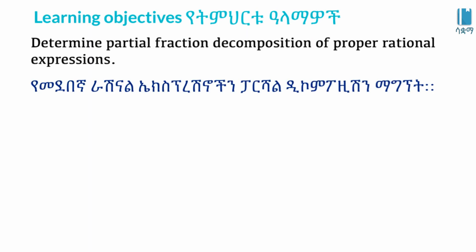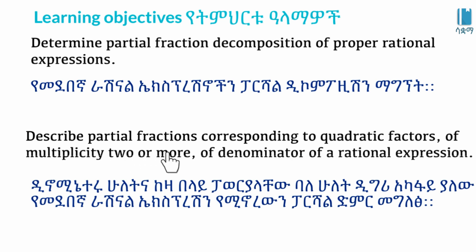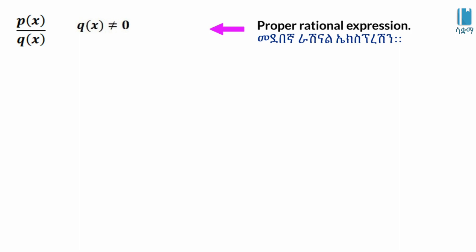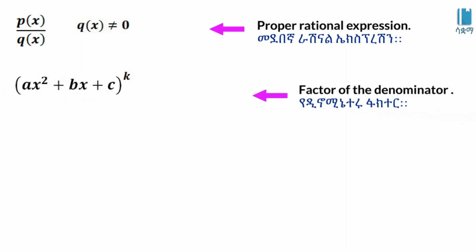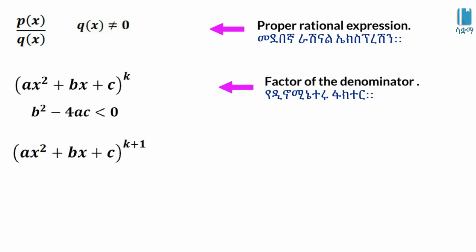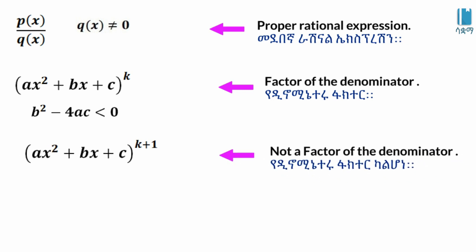Hello everyone. In this video, I am going to show you the rational expression with quadratic denominators. This covers the power of quadratic expressions — specifically quadratic factors — and decomposing them into partial fractions. Here, p of x over q of x is a rational expression where q of x is not zero. The factor x squared plus bx plus c raised to the power of k leads to partial fractions.